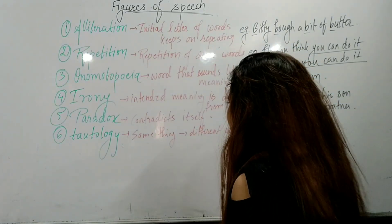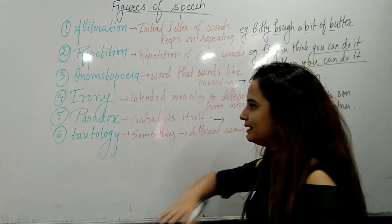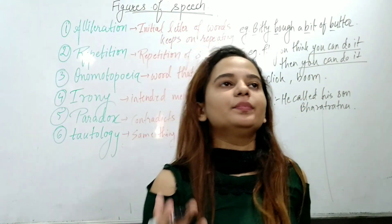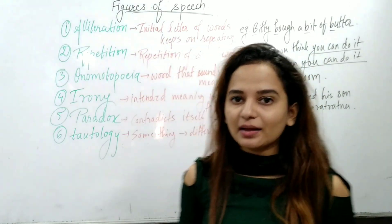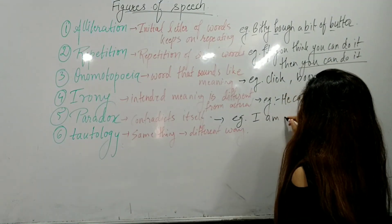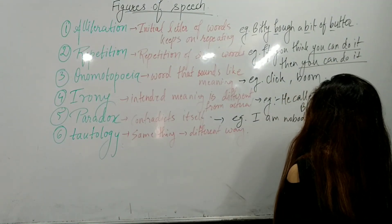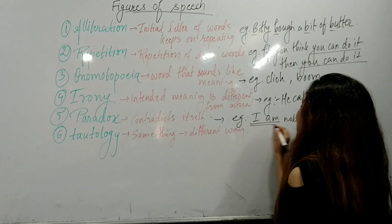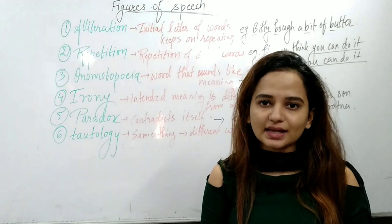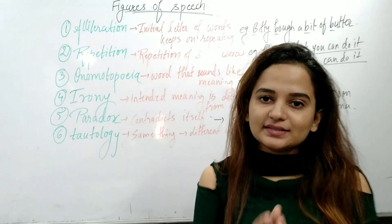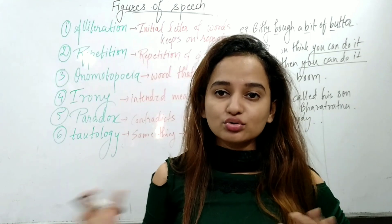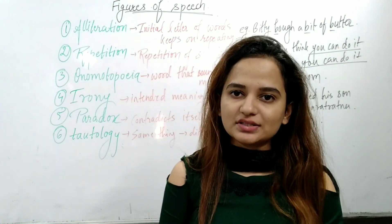Next we have paradox. Paradox means that a sentence contradicts itself. For example: 'I am nobody.' How can we say that? If I am, then I am not nobody. The sentence contradicts itself — and that is what we call paradox.